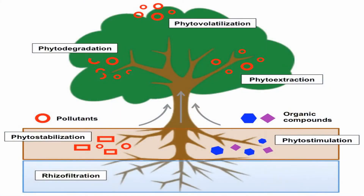Looking at this figure, we can summarize all applications of the phytoremediation process. Pollutants in the soil are addressed by mechanisms below the soil such as phytostabilization, phytostimulation, and rhizofiltration. Other mechanisms operate inside the plant and above the soil: phytodegradation, phytovolatilization, and phytoextraction.